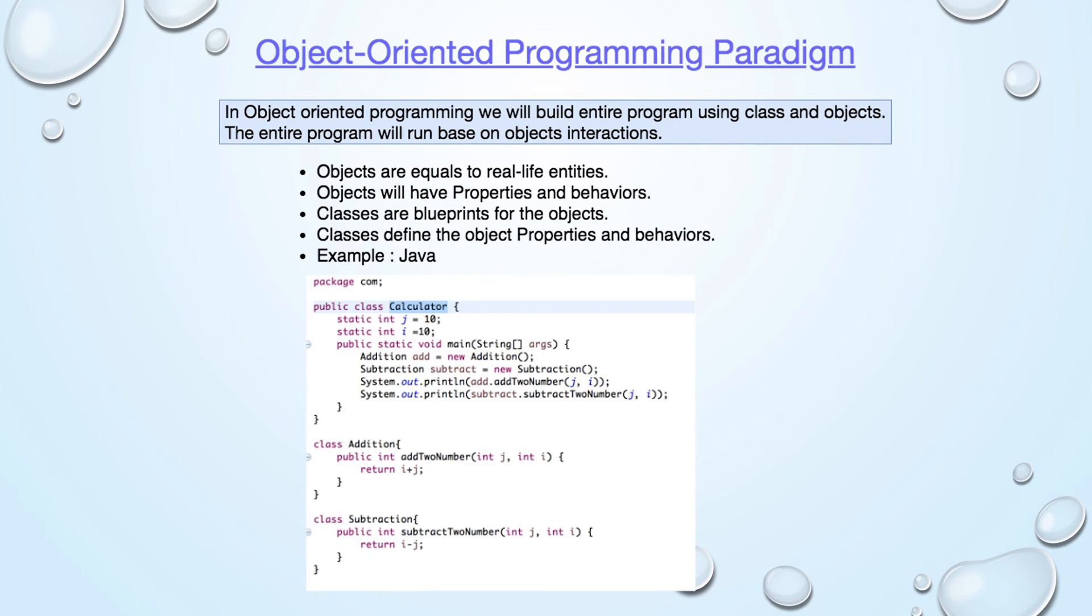In this example, you can see that we have three classes: calculator, addition, and subtraction. The addition class is in charge of adding two numbers. The subtraction class is in charge of subtracting two integers. So, the calculator class will call the addition and subtraction classes to add and subtract two numbers. Here, all three classes interact to produce a result.